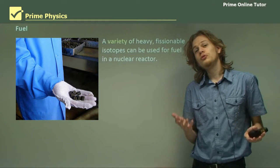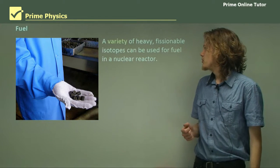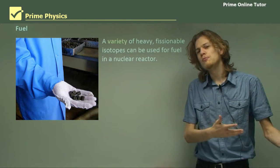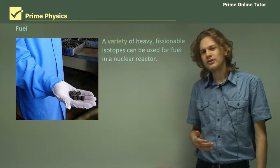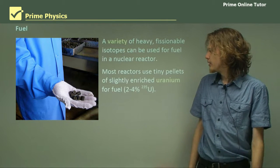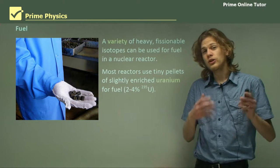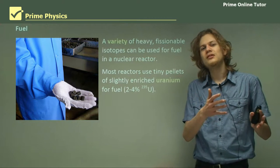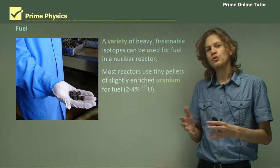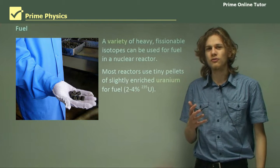What do we use for fuel in a nuclear reactor? We can use a number of fairly heavy isotopes like uranium or plutonium. But in practice, there's one main sort of fuel, and that's uranium, slightly enriched. Enriched uranium means that it contains uranium-235. Uranium-235 is more fissionable than uranium-238, and so is a better fuel.